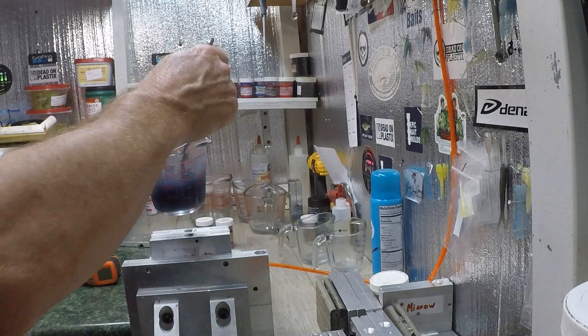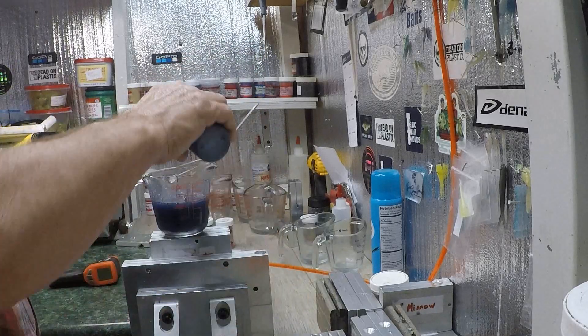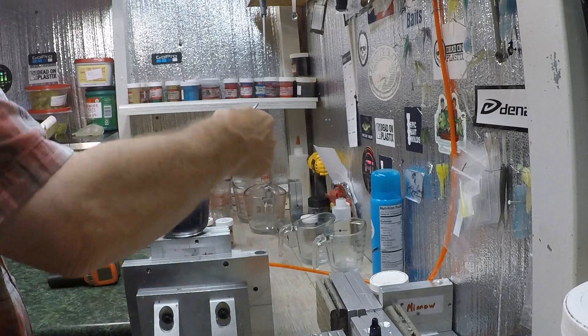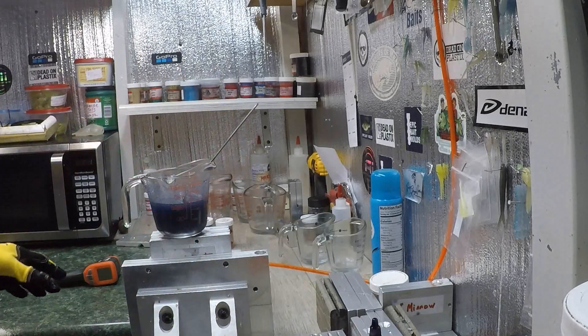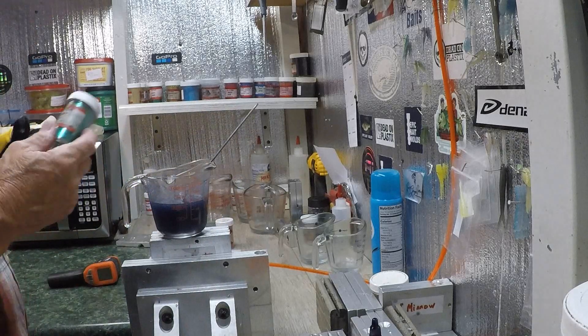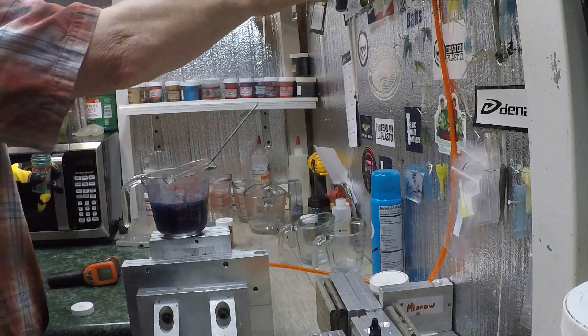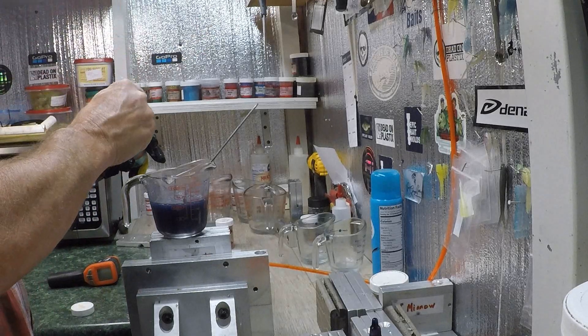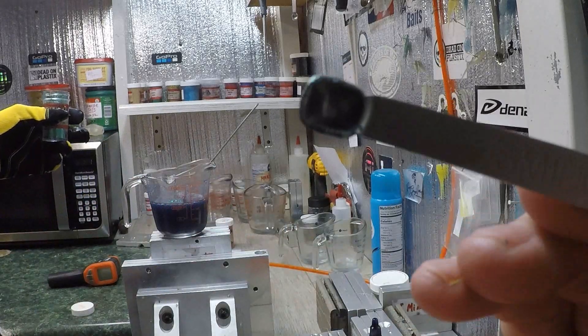I'm gonna add one more drop of Junebug because I wasn't happy with it. That's better. Now I'm putting .015, the size glitter I use most all the time. I use .008 sometimes in some of the baits.